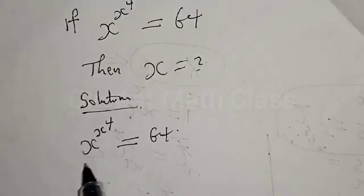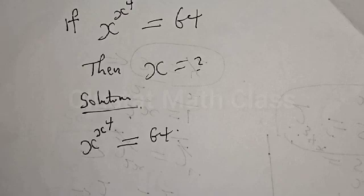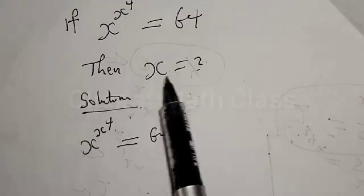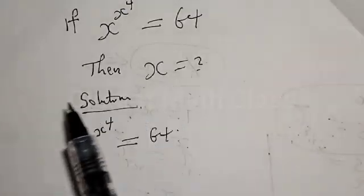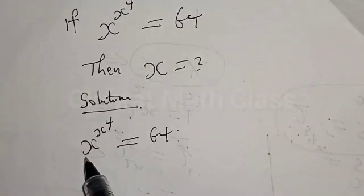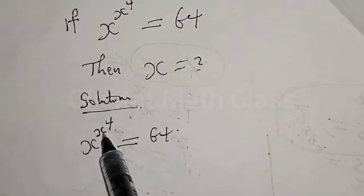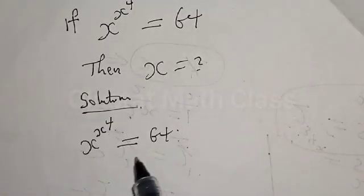If you look at this question, many people would think it is very difficult, but it's not so difficult as we think. So let's quickly use this method to solve it easily. We have s raised to power s raised to power 4 is equal to 64.